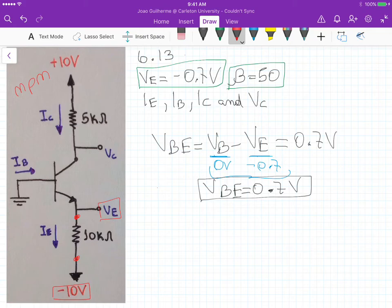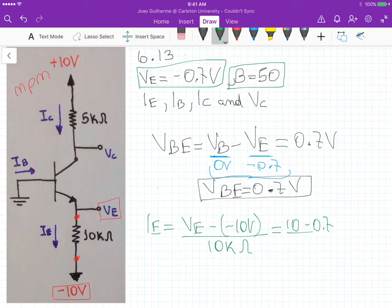And if we know the potential at this terminal here of the resistor, we can apply Ohm's Law to determine the current IE. So IE is equals to the potential difference, so VE minus minus 10 volts divided by the resistance, 10K Ohm. And if we plug in this minus 0.7 here, basically this minus minus 10 becomes positive, so we get 10 here, minus 0.7 divided by 10K. And that's equals to 0.93 milliamps.